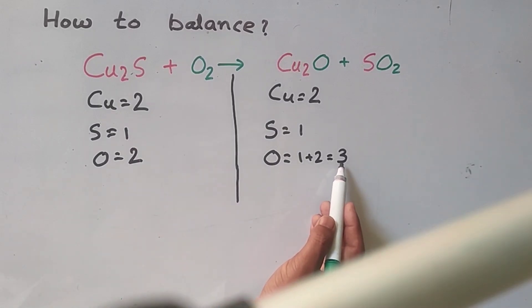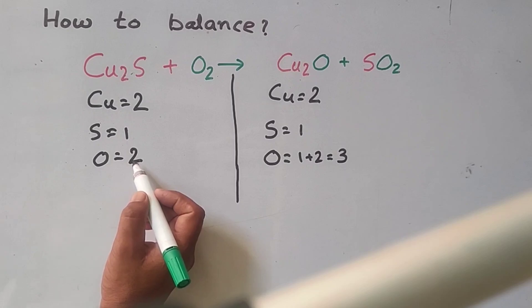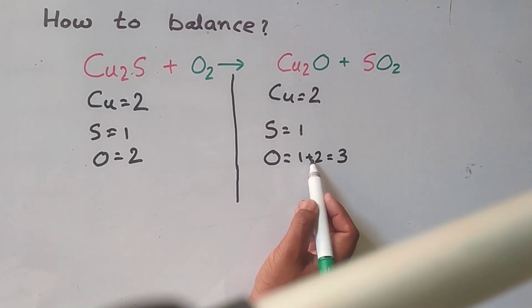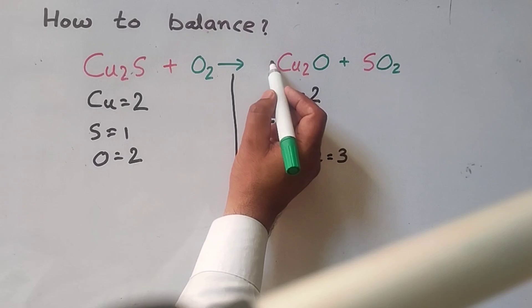Oxygen here is 3 and here is 2. We will convert the oxygen number to even. Here is one oxygen, we will add 2.